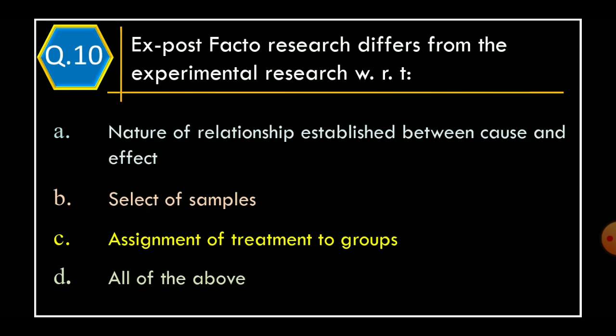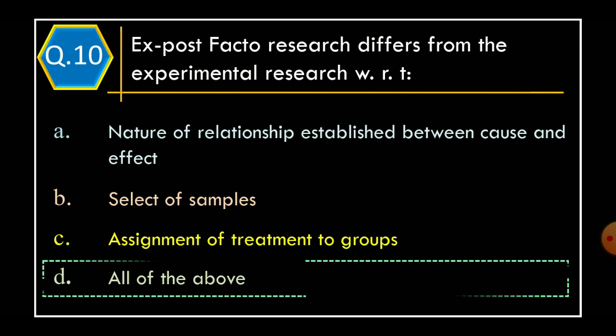Question 10. Ex post facto research differs from experimental research with respect to: Option A: Nature of relationship established between cause and effect. Option B: Selection of samples. Option C: Assignment of treatment to groups. Option D: All of the above. The correct option is Option D, all of the above.